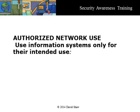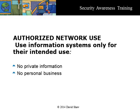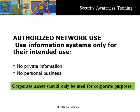Authorized network use means that people should only access and use information systems, including assets, to perform functions related to their duties. Users should not process, store, or communicate private information or conduct personal affairs or business on any corporate information system asset. Corporate assets should only be used for corporate purposes.